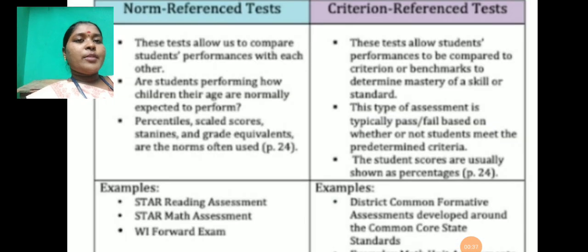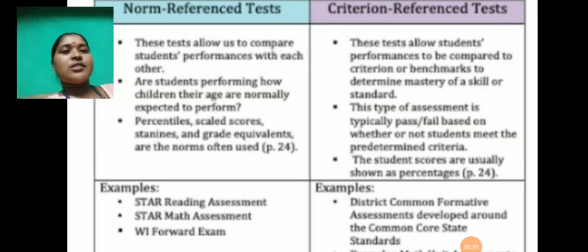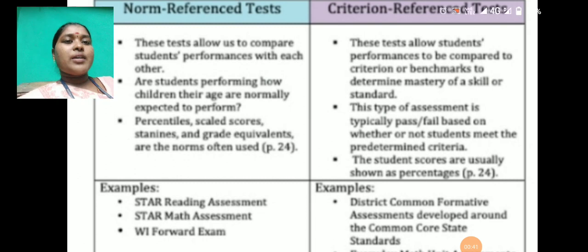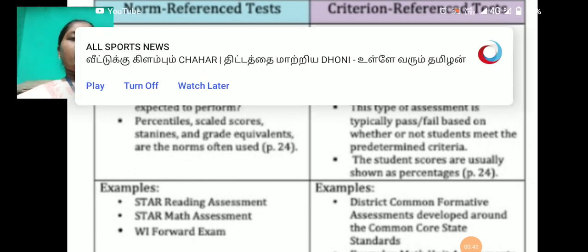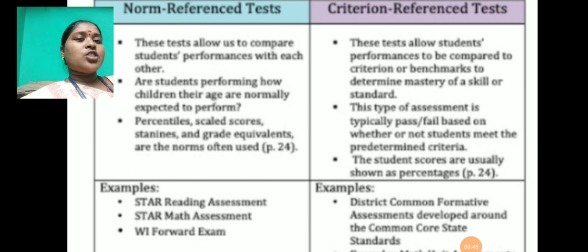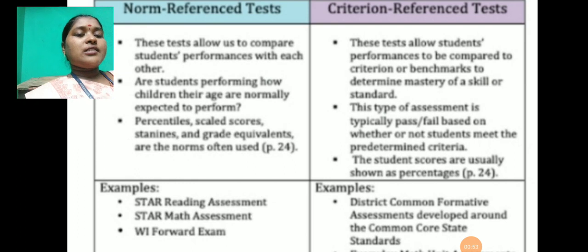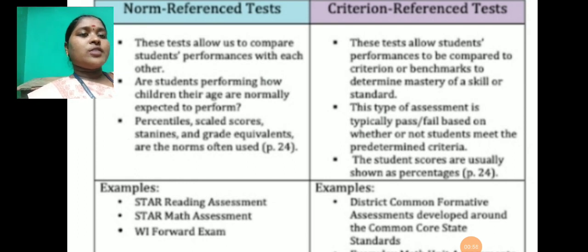Next are Norm-Referenced tests and Criterion-Referenced tests. These tests allow us to compare students' performance with each other, or how students are performing compared to how children their age are normally expected to perform. Percentile scaled scores, stanines, and grade equivalents are the norms often used.